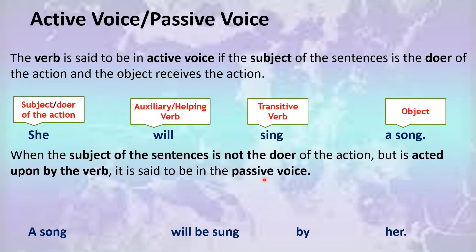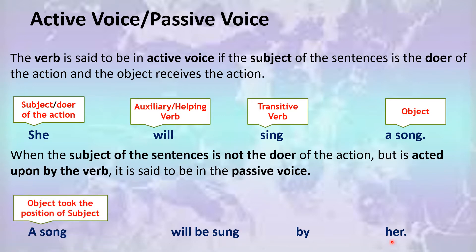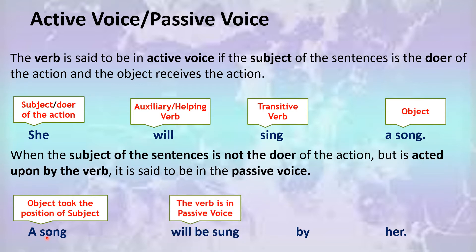For example: 'A song will be sung by her.' In this sentence, 'a song' is the object which has taken the position of the subject. The sentence has been converted into its passive form, which is why 'a song' appears at the start. 'Sung' is the verb in its passive voice form and 'will be' is the auxiliary verb.